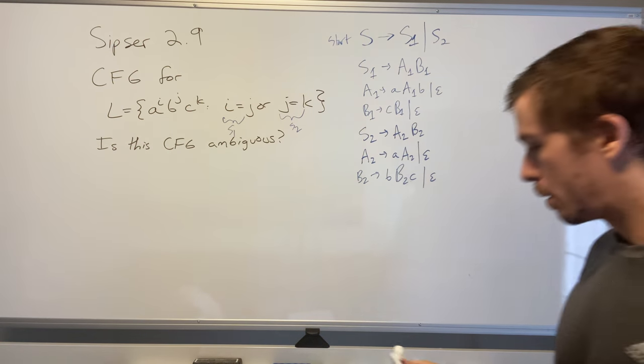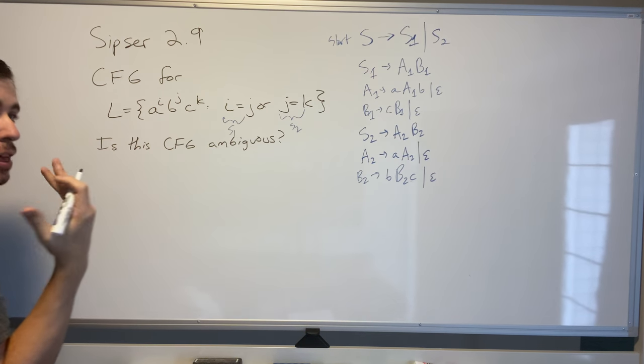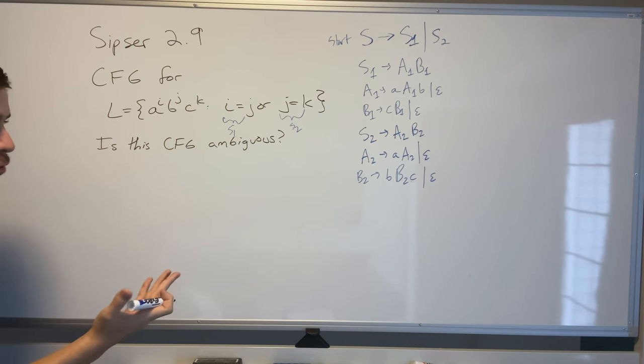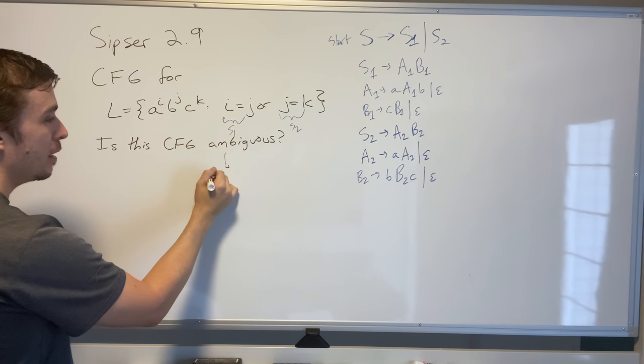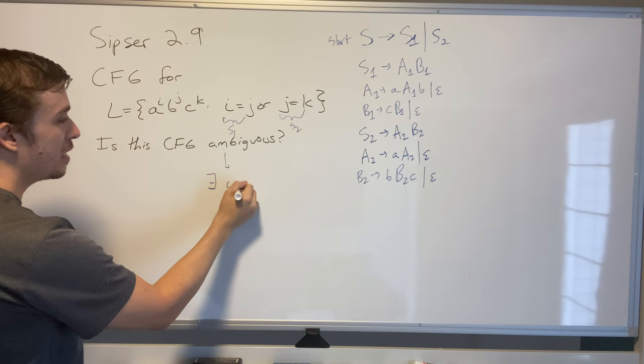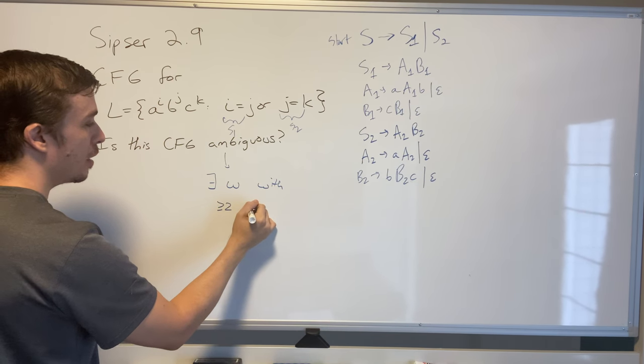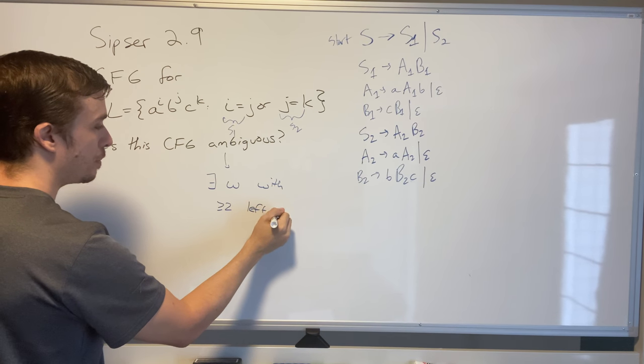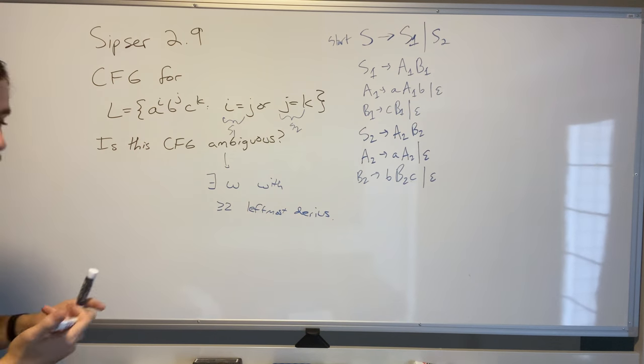Remember that ambiguous is about the grammar and not the language. The grammar is ambiguous if there exists some string w with at least two leftmost derivations or parse trees. It's exactly the same if we say parse tree here.